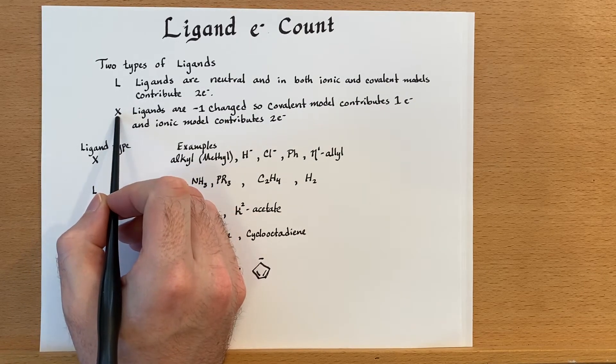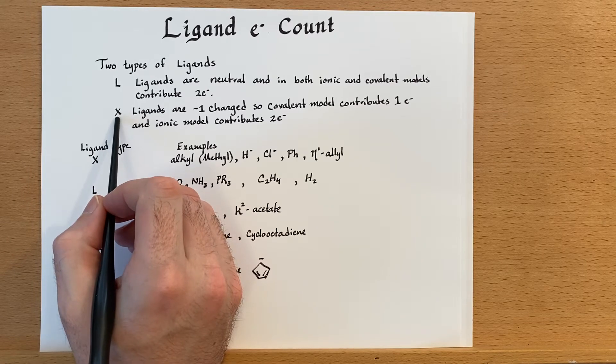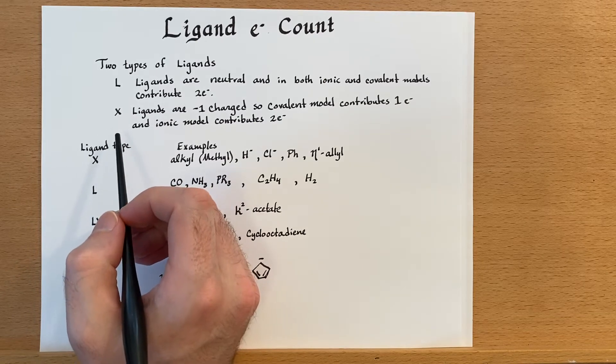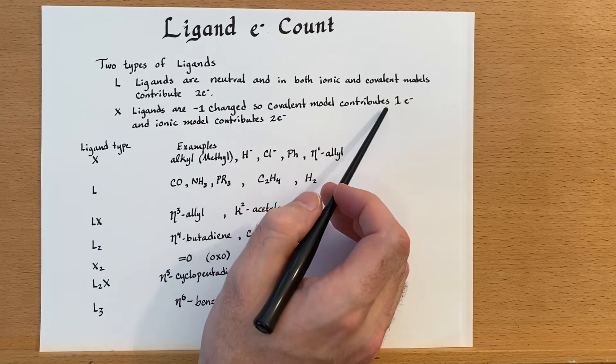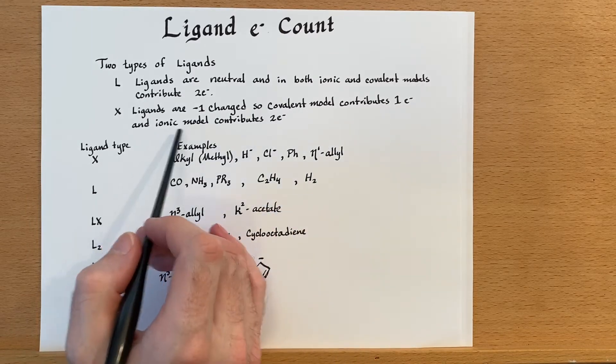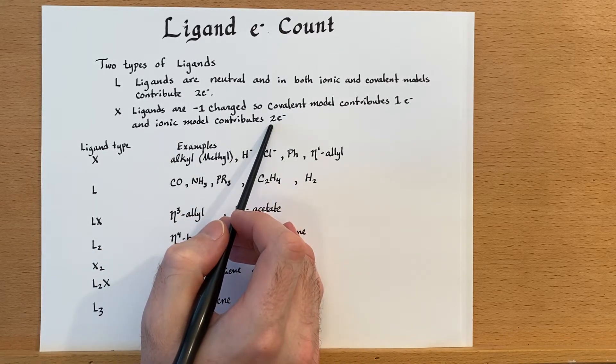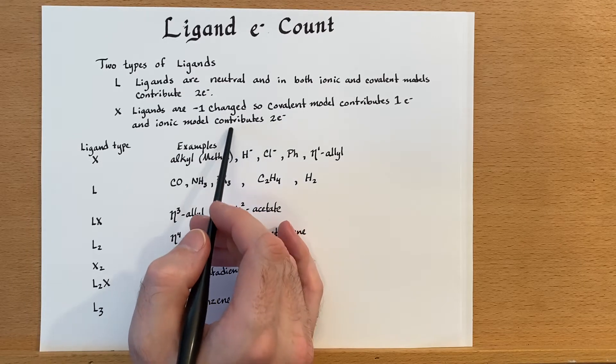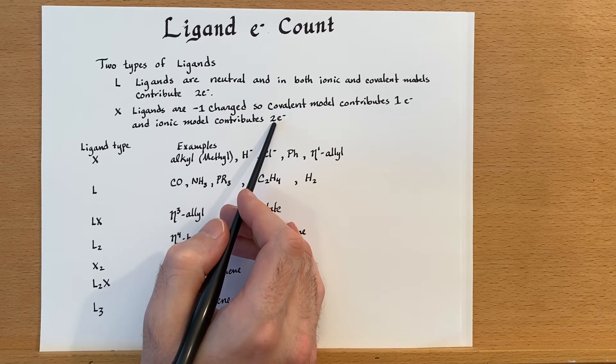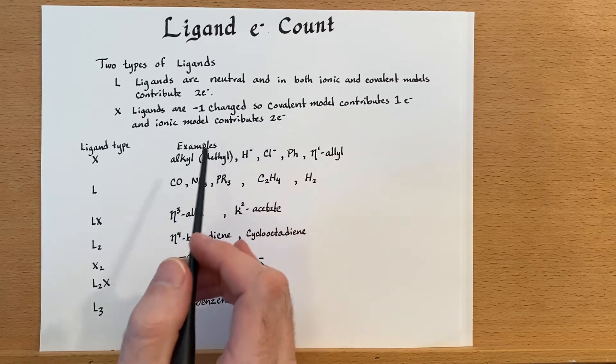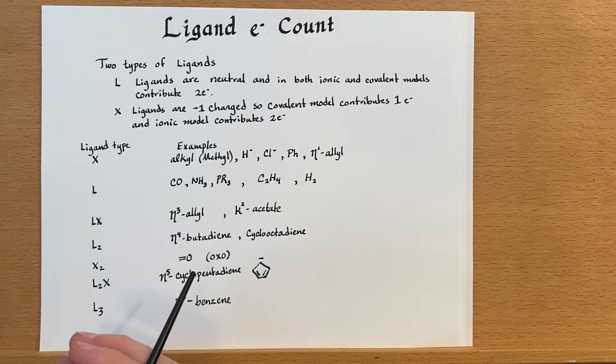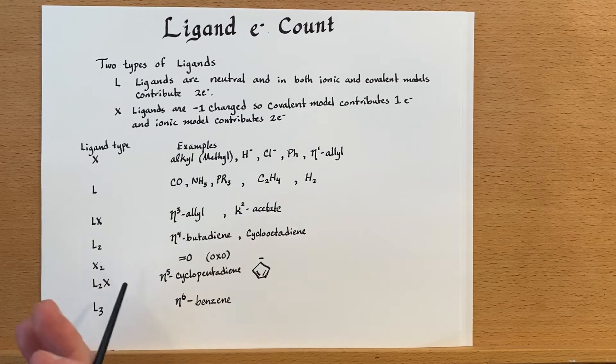An X ligand are ligands that have a negative one charge. So the covalent and ionic models are going to be different electron counts. In the covalent model, they will only contribute one electron, and in the ionic model, they will contribute two. Essentially, what this does is it considers that the negative one charge is actually on the ligand, whereas covalent models consider that those electrons that the species came into the compound with kind of stay with their original owners.